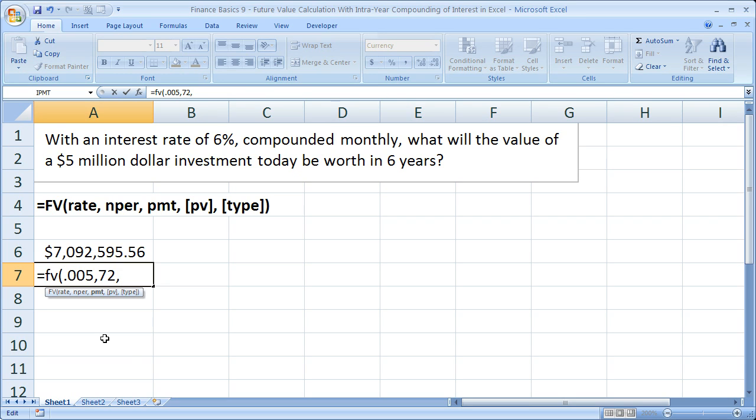Remember, there's no payment, so either put a 0 for payment or simply put nothing and another comma. For the present value, just like before, we put 5 million in. You could be working in thousands and just put 5,000, but I'll put the whole 5 million. Then close the parentheses. Let's hit enter and see what we get.